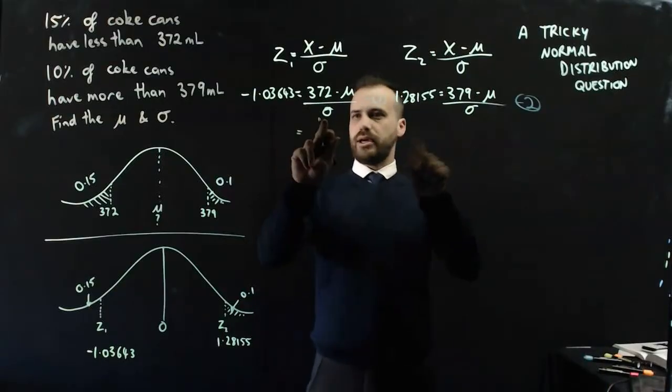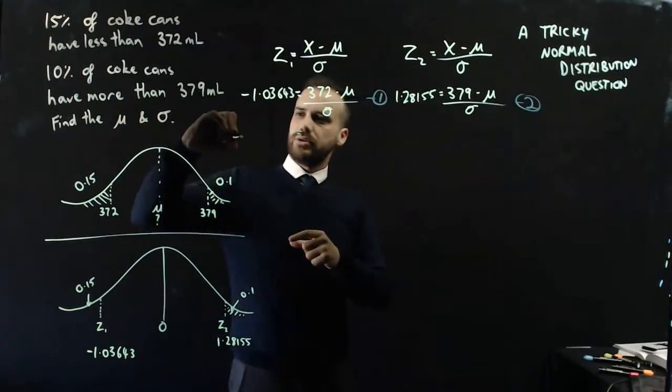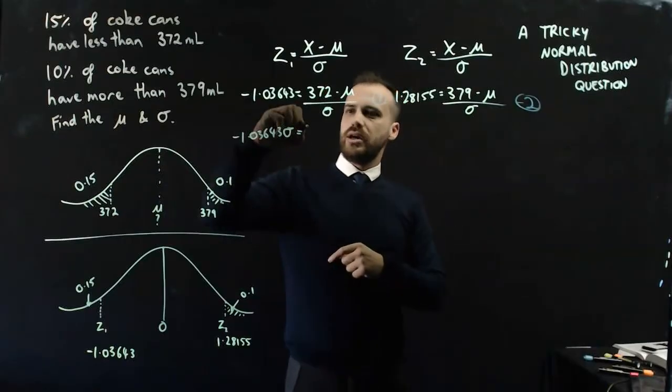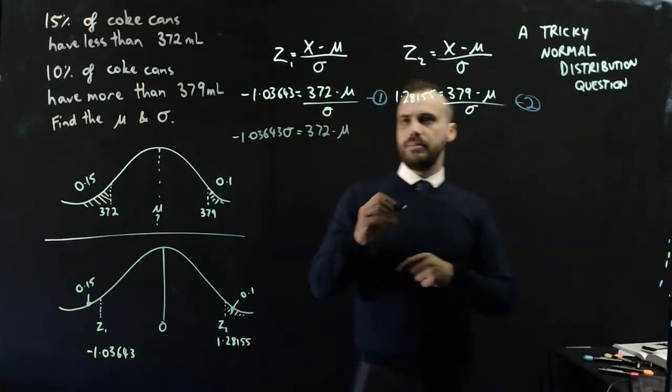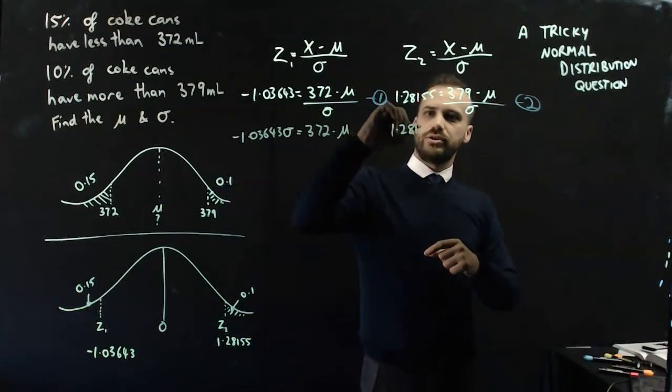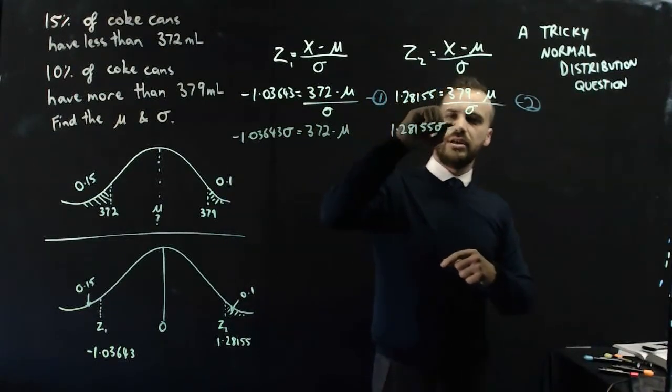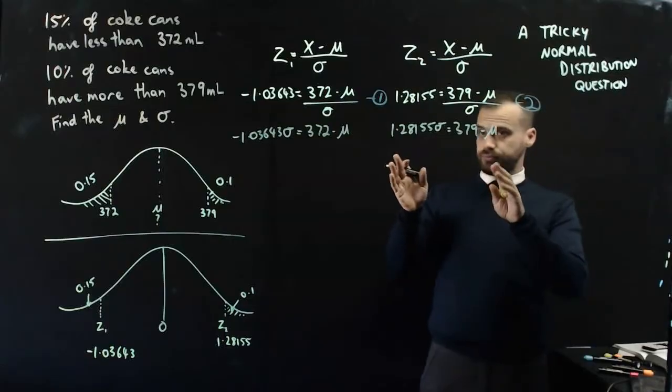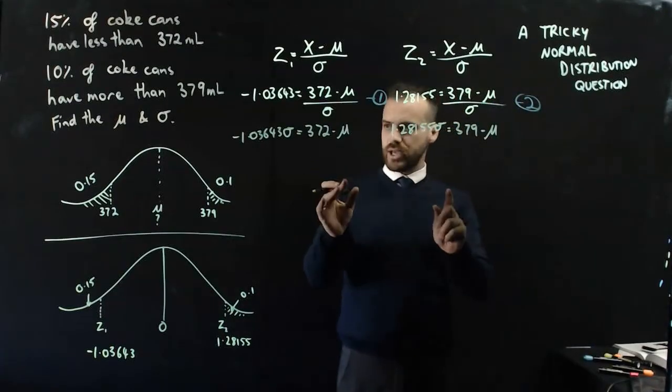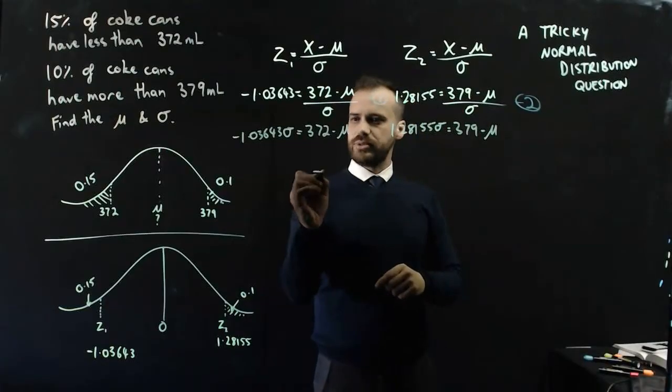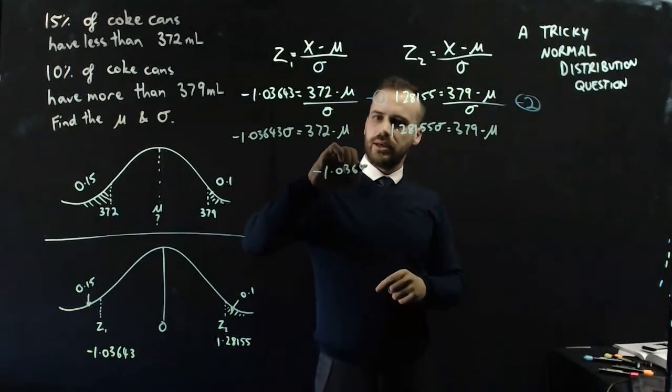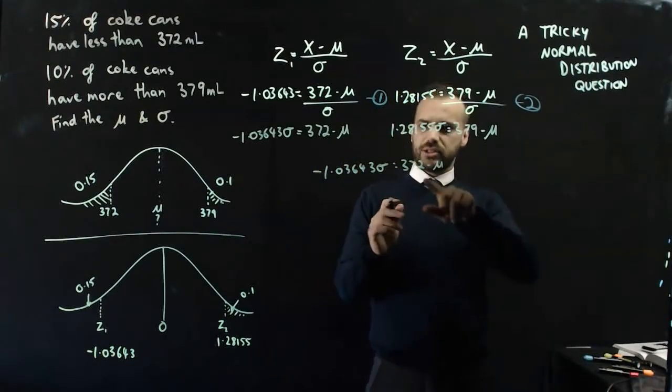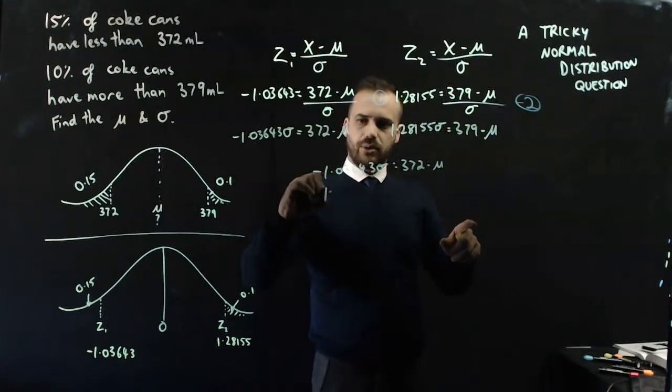I might just multiply by the standard deviation on both sides. So we'll get negative 1.03643 times the standard deviation equals 372 minus the mean. And I'll do the same on this side. 1.28155 standard deviation equals 379 minus the mean. And you can see now the equations are in the same form. That's great news because now I can solve them simultaneously using elimination.